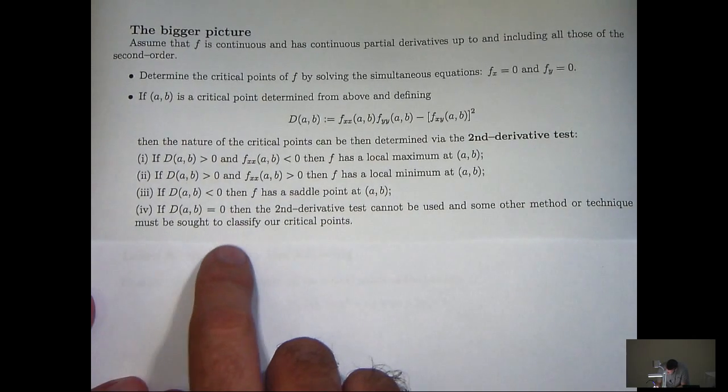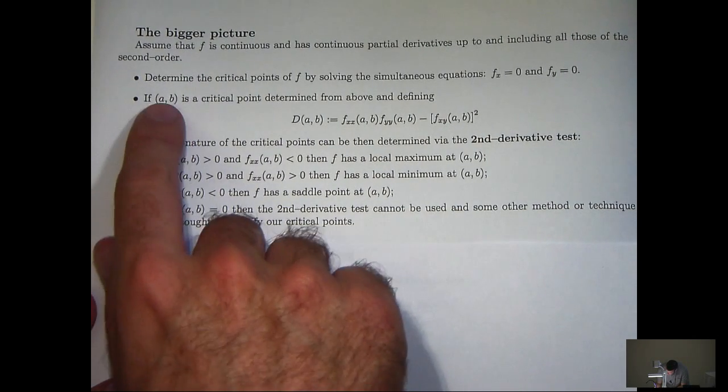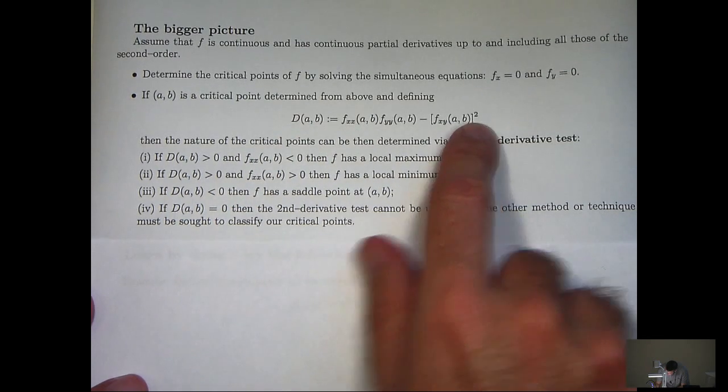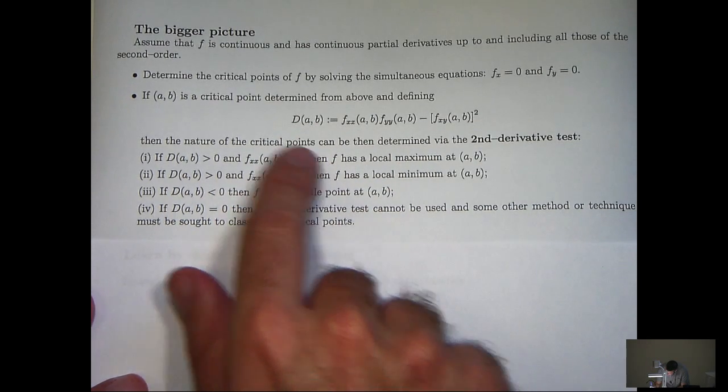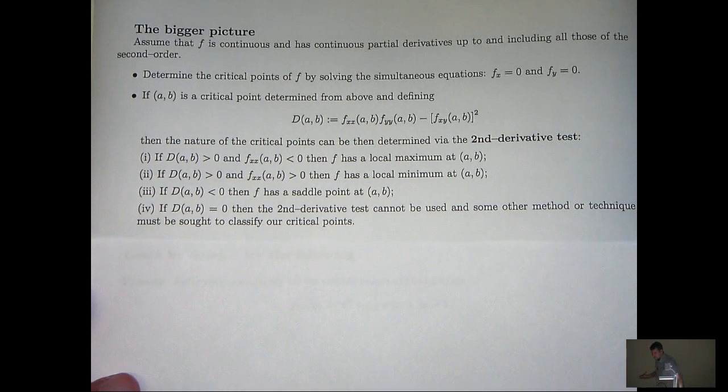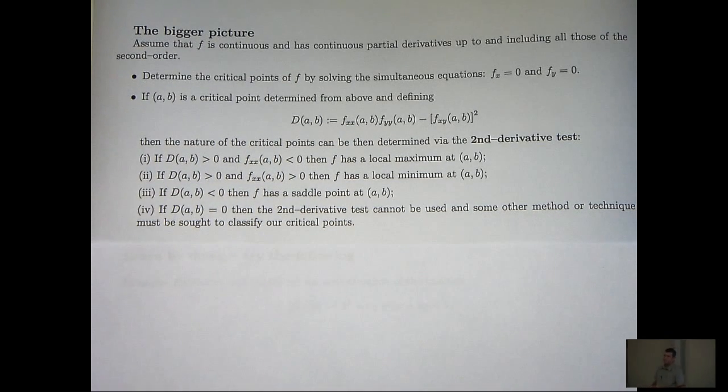Essentially, if (a, b) is a critical point and we define d in this way, then what we do is look at the sign of these expressions here. And as the name suggests, the second derivative test involves second derivatives.